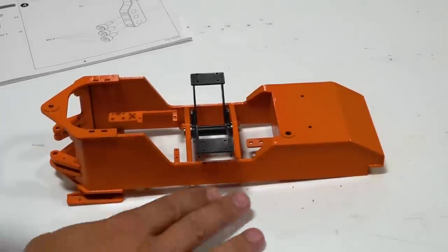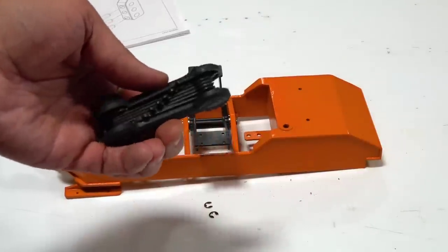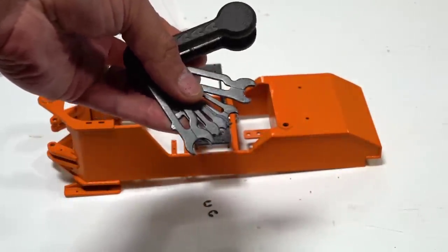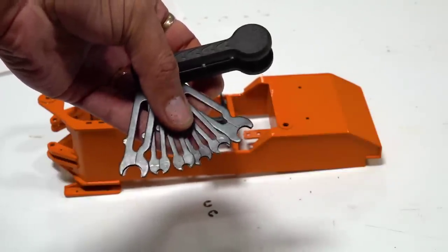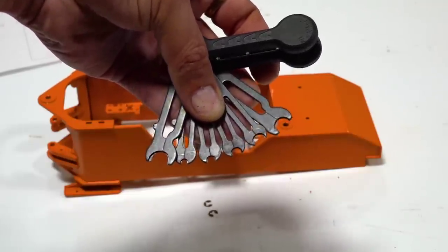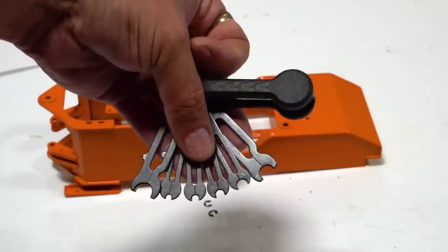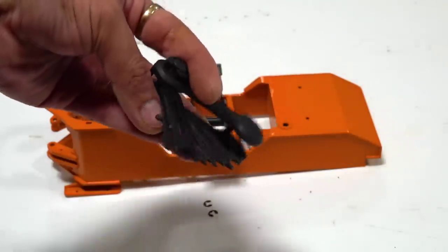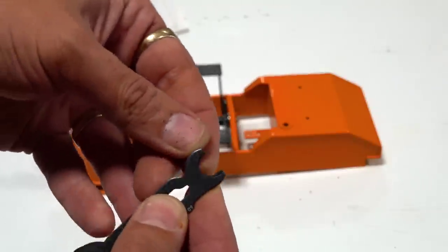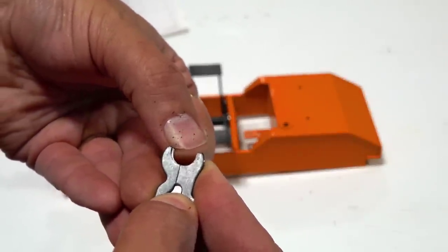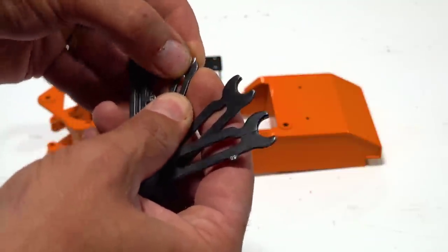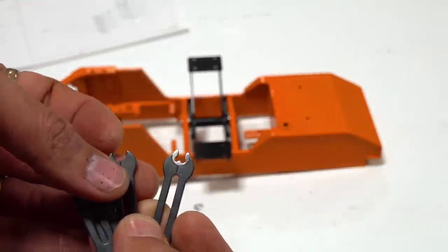Now for those sweet E buttons as the instruction book calls it, or the E clips, or for some people they know them as Jesus clips because that's what they shout as soon as they fly onto the floor. There is this handy dandy E clip tool. Look at this. I'm going to try to find one on Amazon and link it for you guys in the video description box below because every single hobbyist should have one of these.